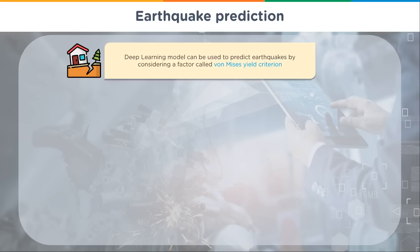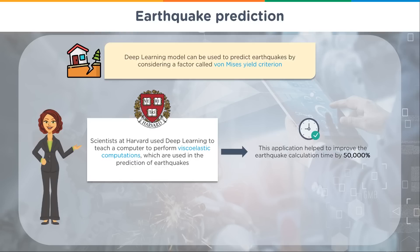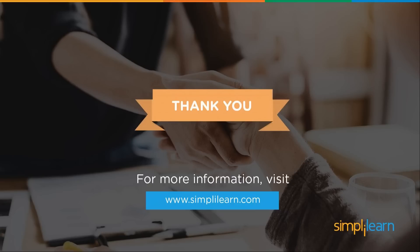Earthquake prediction — now we're looking at human safety. You can also think of weather predictions here. Deep learning models can predict earthquakes by considering a factor called the von Mises yield criterion. Scientists at Harvard used deep learning to teach a computer to perform viscoelastic computations used in earthquake prediction. This helped improve earthquake calculation by 50,000 percent — going from almost no reliability in guessing to having a decent estimate of when earthquakes will hit.